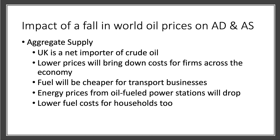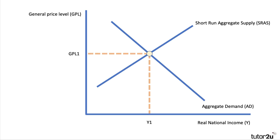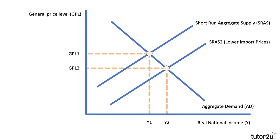Crucially, the main effect would be on short-run aggregate supply. The UK is a net importer of oil, so if the world price comes down, that lowers costs for many firms right across the economy. If you're a transport business, your fuel will be cheaper. If you're a power station using oil, energy prices will go down. Households will also face lower fuel costs. The main effect would be lower import prices, which is good news for GDP and brings down inflationary pressure.